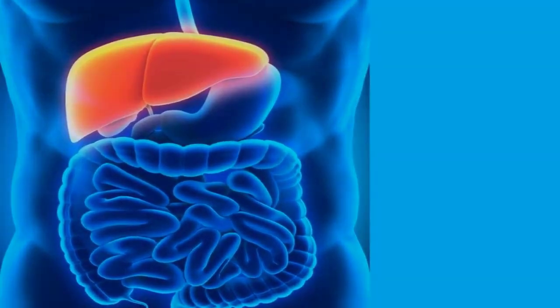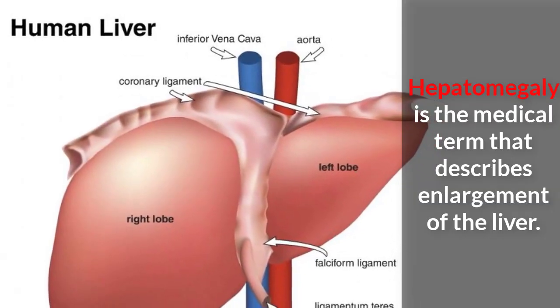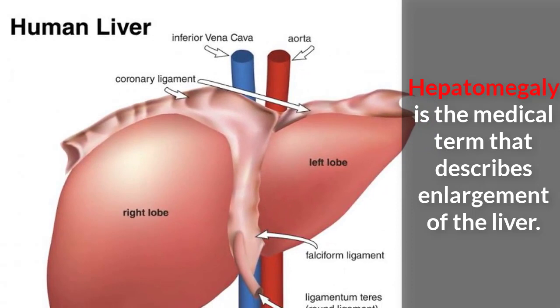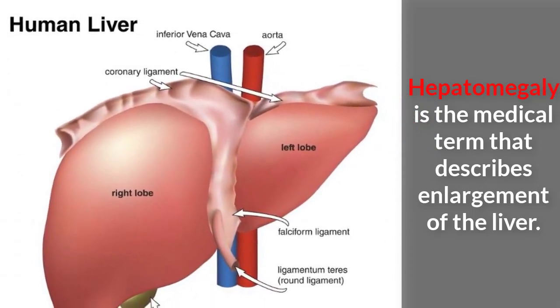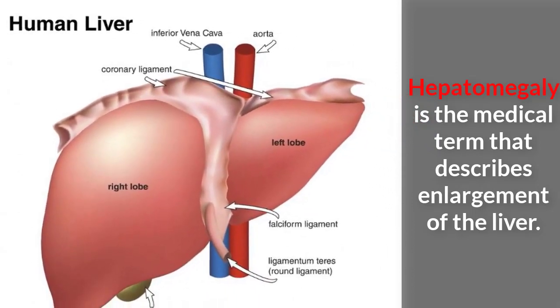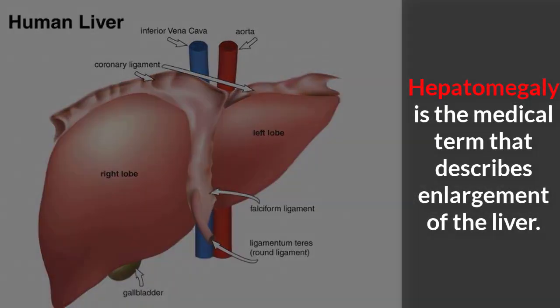Hepatomegaly is the medical term that describes an enlargement of the liver. In children, palpating the liver and finding its edge below the margin of the ribs can indicate hepatomegaly.